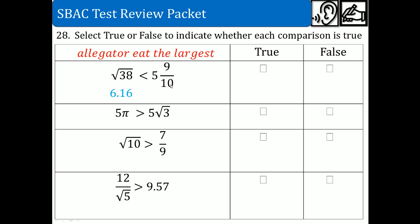9 over 10 is 0.9, so the value is 5.9. The inequality sign — the alligator — shows the mouth eating the larger value. Here the alligator is eating the left side, suggesting that side is larger. But 5.9 is not larger than 6.16, so that comparison is false.